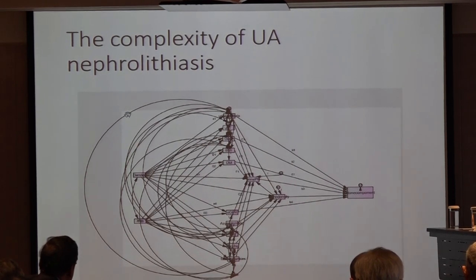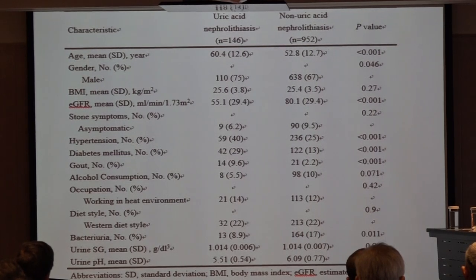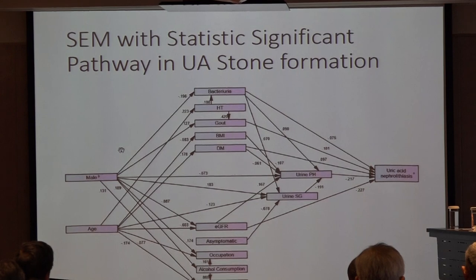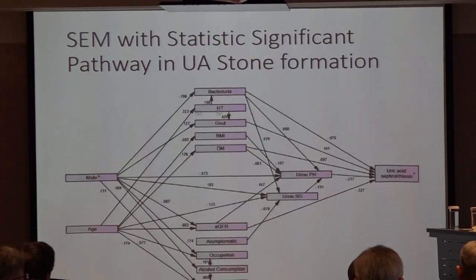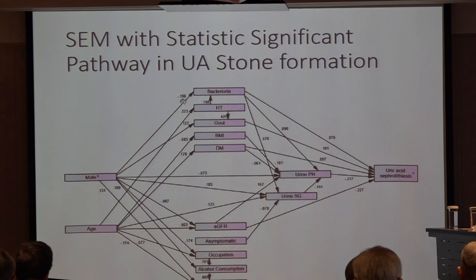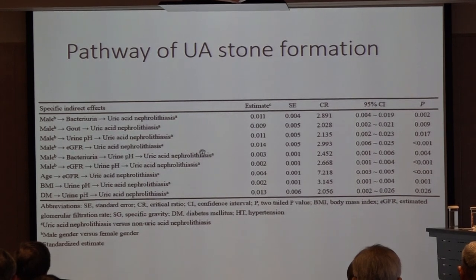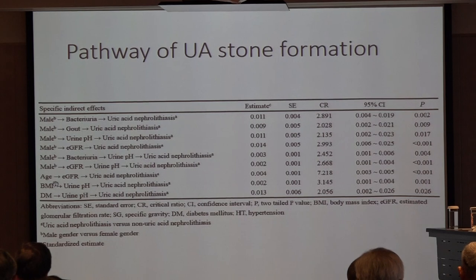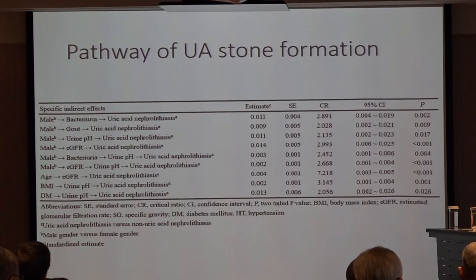When using SEM in our model, we found a very complex relationship between every factor, and we use SEM to examine and test every pathway. Our SEM results from over one thousand patients showed the final best-fitting model for uric acid stone formation. Each pathway is called a structural pathway, and the numbers next to each arrow indicate negative or positive effects. We found nine significant pathways of uric stone formation.